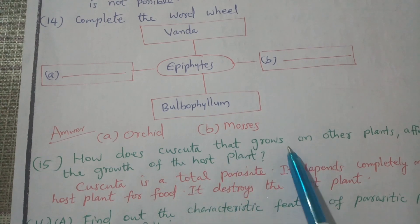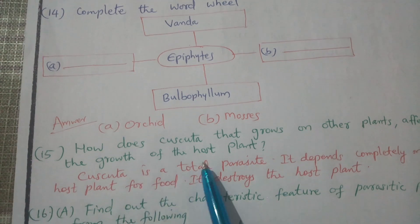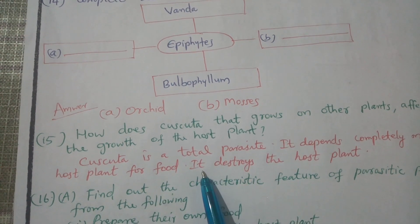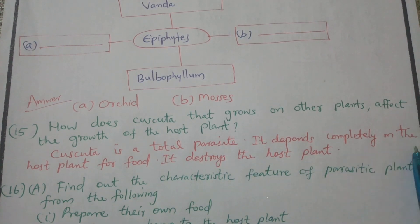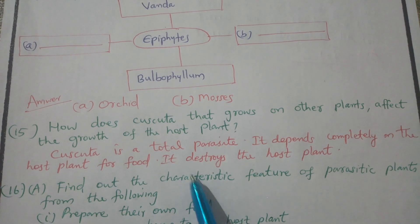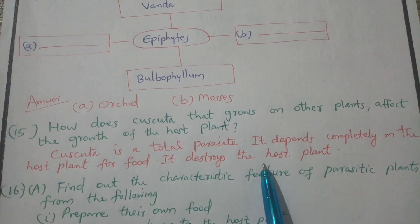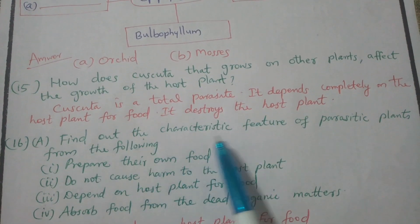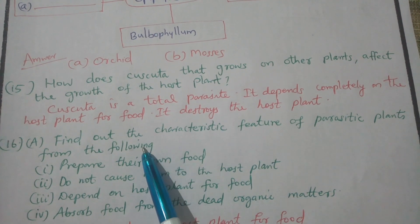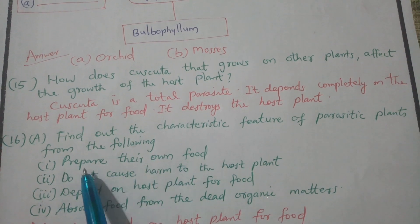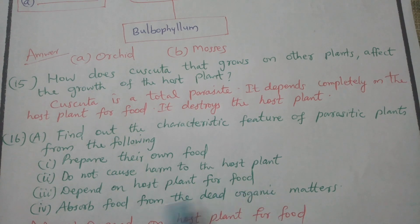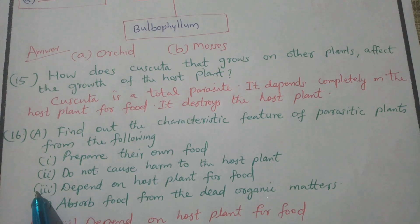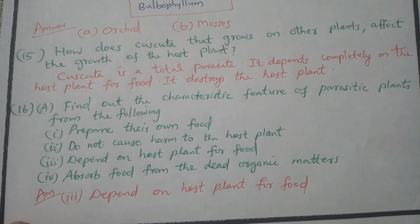How does cuscuta, which grows on other plants, affect the growth of the host plant? Cuscuta is a total parasite — it depends completely on the host plant for food and will destroy the host plant. The characteristic feature of parasitic plants is that they depend on the host plant for food.